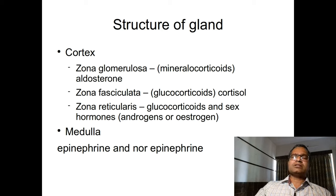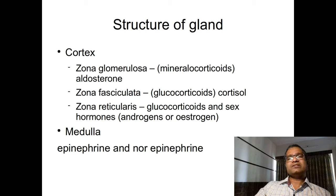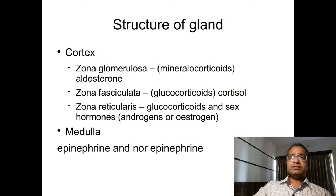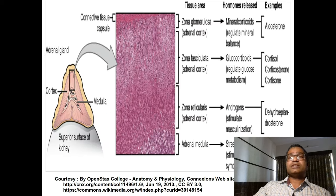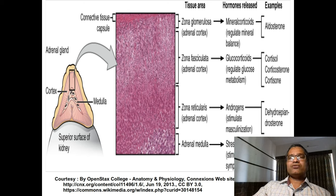The cortex and medulla are structurally, developmentally, and functionally different. The cortex is divided into three parts: zona glomerulosa, zona fasciculata, and zona reticularis — from outer to inner — with the medulla being the innermost region.